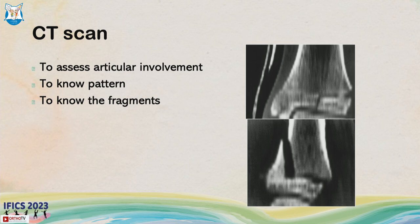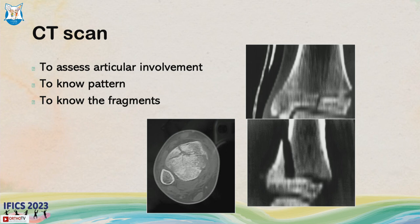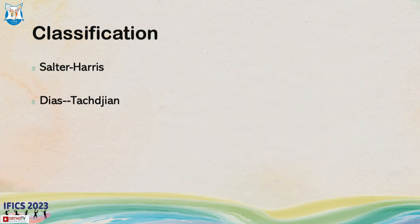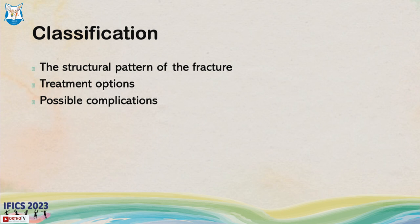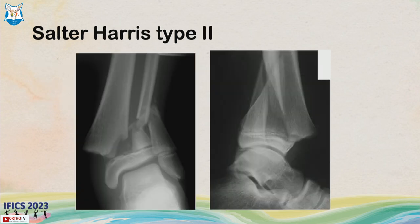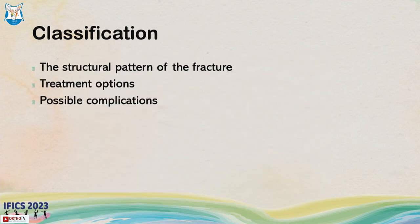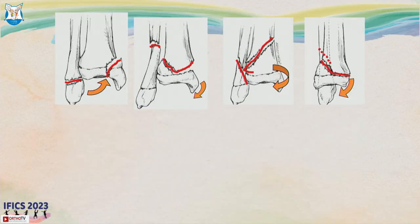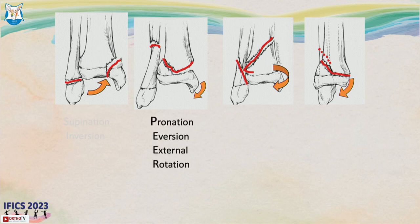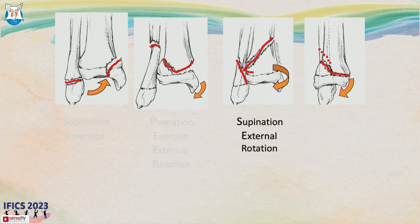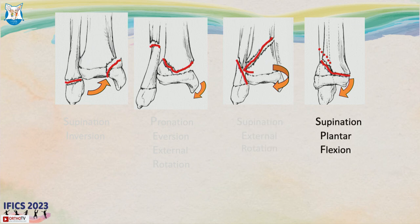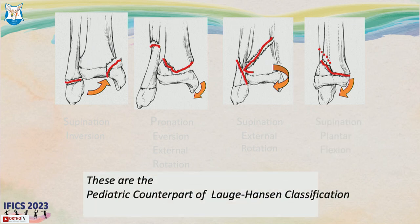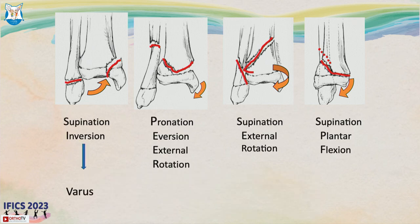Once you confirm the fracture, CT scan helps determine screw direction and fragment anatomy for pre-op planning. We use Salter-Harris and Dias-Tajian classifications. The Dias-Tajian classification is the pediatric equivalent of the Loghansin, using the same terms. The four classical mechanisms in children are: supination inversion, pronation eversion external rotation, supination external rotation, and supination plantar flexion.